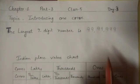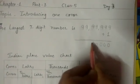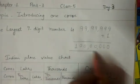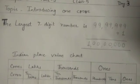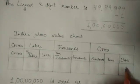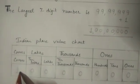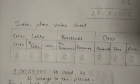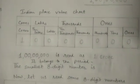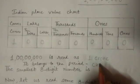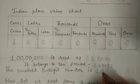Let us add 1 to this number. Now let us enter this number in the Indian place value chart. I have added one more column to the left of the Indian place value chart. The number is read as 1 crore — it belongs to the period crores. So the smallest 8-digit number is 1 crore.